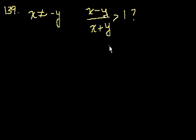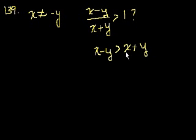So we could multiply both sides by x plus y. You get x minus y is greater than x plus y. And so this holds true if what? Let's see, we could subtract x from both sides. Subtracting x from both sides, you get minus y is greater than y.